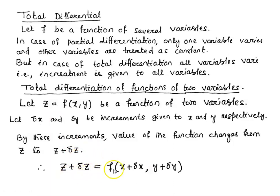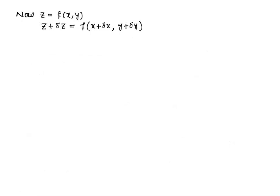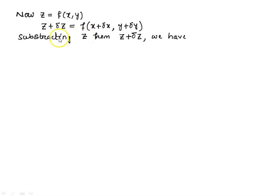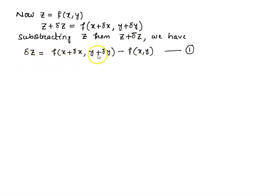Correspondingly the value of the function z will change and the new value is z plus delta z. So z plus delta z equals the value of the function at the point x plus delta x, y plus delta y. We have the initial value z equal to f of x, y and after the increment the value changes to z plus delta z which is f of x plus delta x, y plus delta y. Subtracting z from z plus delta z, we have delta z equal to f(x plus delta x, y plus delta y) minus f(x, y).